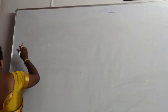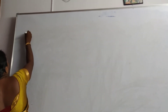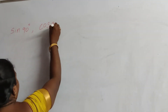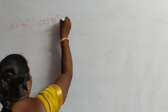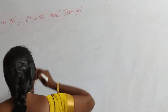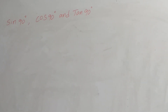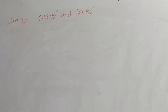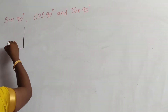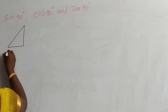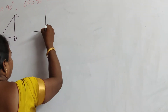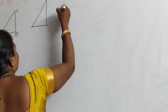Now we will find out the values of sin 90 degrees, cos 90 degrees, and tan 90 degrees. Here also you should take a right-angled triangle. I will show the difference with a diagram.